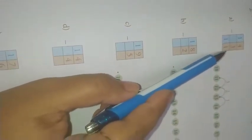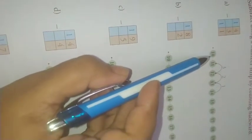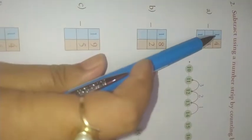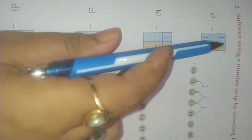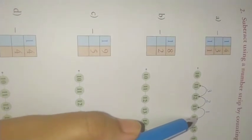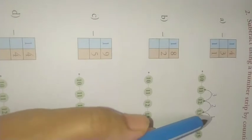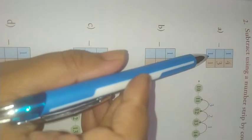See 14 minus 3. Here the number strips are from 10 to 20. So you have to start from 14 because you have to subtract 3 from 14. Starting from 14 you have to count backward 3 because you have to subtract 3 from 14. So 1, 2, 3. Which number you reach? 11. So the answer is 11.